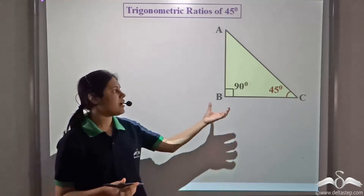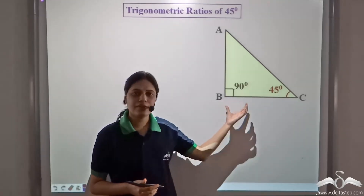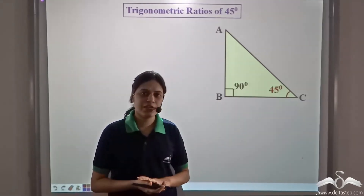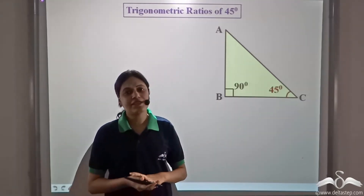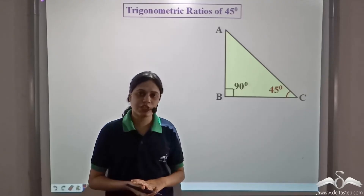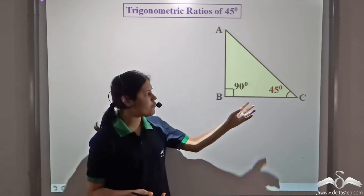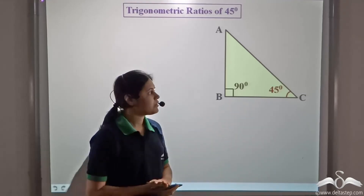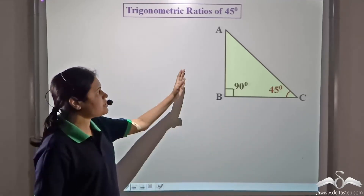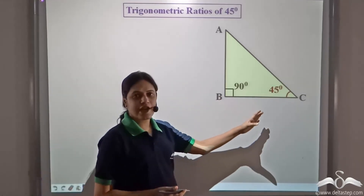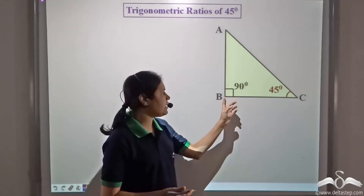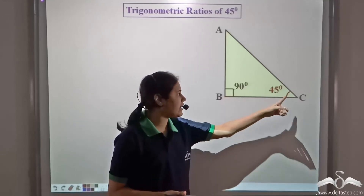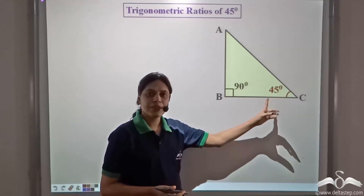Let us consider a triangle with an angle of 45 degrees and find the value of all the trigonometric ratios for 45 degrees. In this right angle triangle, angle B is 90 degrees and angle C is 45 degrees.